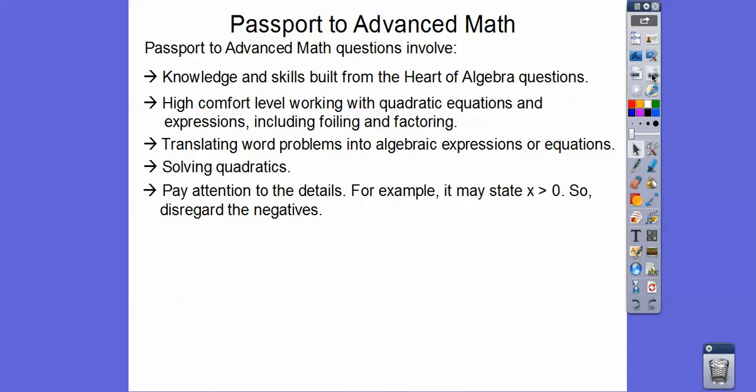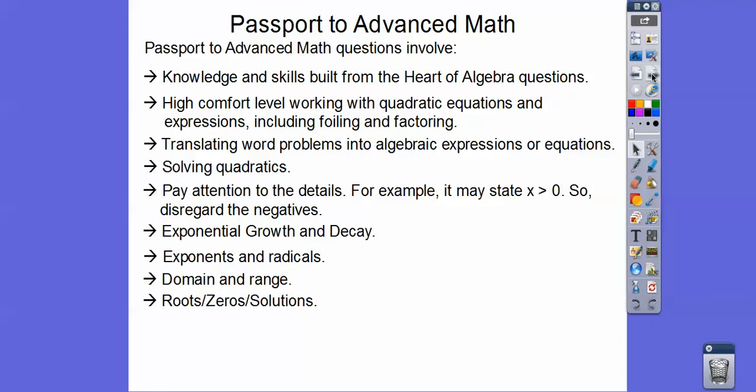And then you need to pay attention to the detail because they try to trip you up wherever they can. And so they may state up in the very beginning that you have x is greater than zero. So that means when you solve for x and one of them is negative, you've got to get rid of the negative one. Exponential growth and decay, exponents and radicals, and then domain and range and roots, zeros, solutions, all the same thing. A root is a zero is a solution.